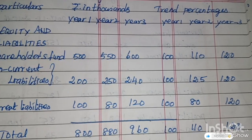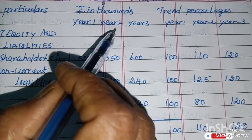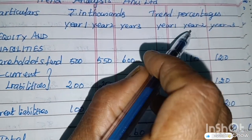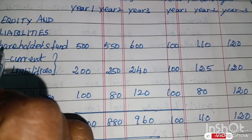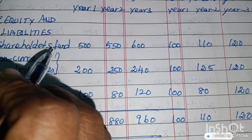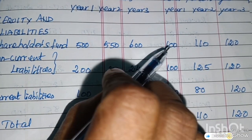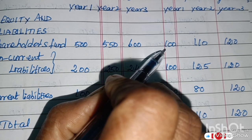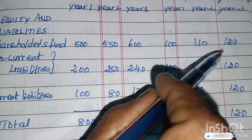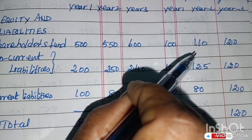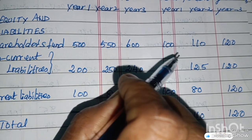Sum No. 15 — Trend Analysis for Anu Limited. Particulars are in Rupees in thousands. Columns: Year 1, Year 2, Year 3 (actual figures), and Trend Percentage for Year 1, Year 2, Year 3. First section — Liabilities: Shareholders Fund — 500, 550, 600. Trend percentages: Year 1 is 100%, Year 2 is 110, Year 3 is 120. The base year (Year 1) is always taken as 100 for calculating trend percentages.